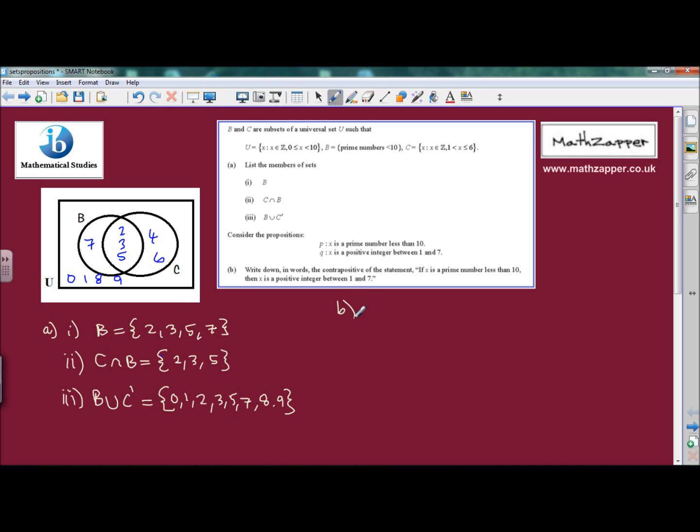Moving on to part B, we're asked to consider the propositions: P, X is a prime number less than 10, and Q, X is a positive integer between 1 and 7. Now, the thing that we have to do is write down in words the contrapositive of the statement: if X is a prime number less than 10, then X is a positive integer between 1 and 7.